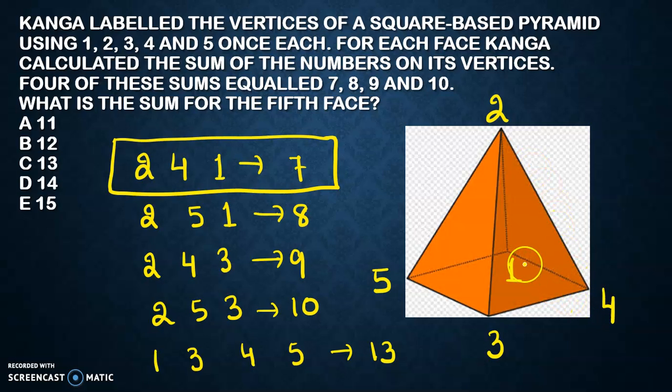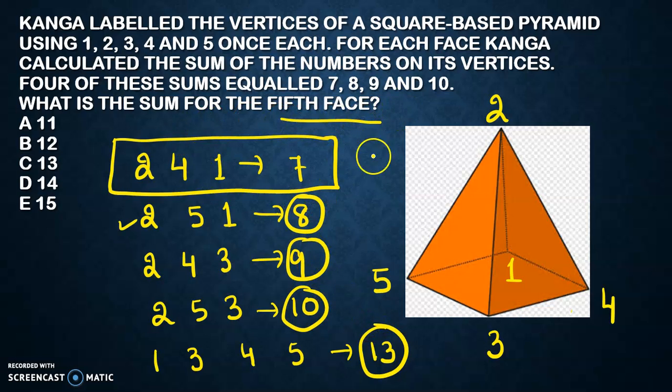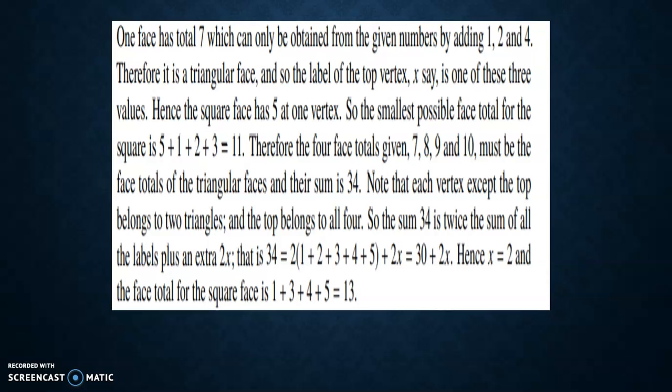In one of the vertices I put 2, 4, 1, so remaining 5 and 3 will be in the other vertices. Then you check: 2, 5, 1 gives you 8; 2, 4, 3 gives you 9; 2, 5, 3 gives you 10; and the other here gives you 13. So that is the sum for the fifth face - 7, 8, 9, 10. You can make it so straightforward, you can give the answer.